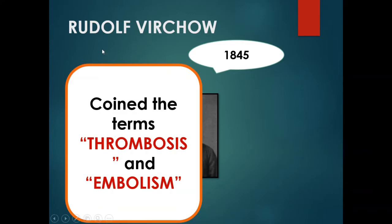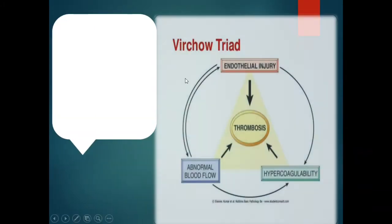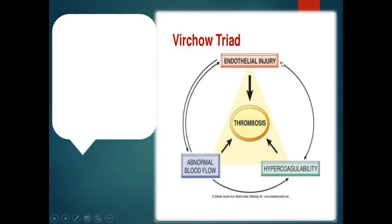Rudolf Virchow is the scientist who described the terms thrombosis and embolism. He also gave Virchow's triad, which identifies three main causes that lead to thrombosis: endothelial injury, hypercoagulability, and abnormal blood flow. We will discuss the mechanisms of each — endothelial injury and how it causes thrombosis, hypercoagulability and its mechanism, and abnormal blood flow and how it causes thrombus formation.